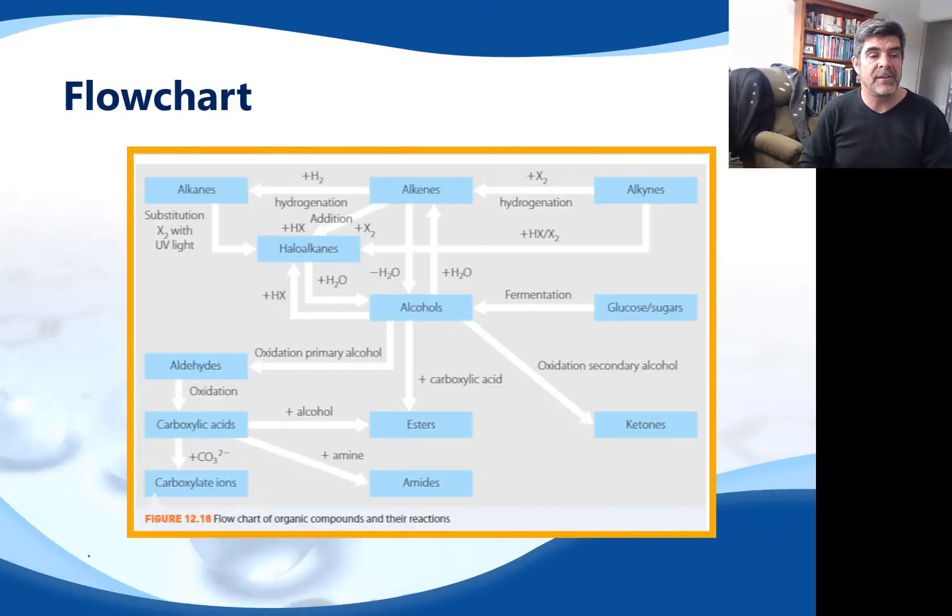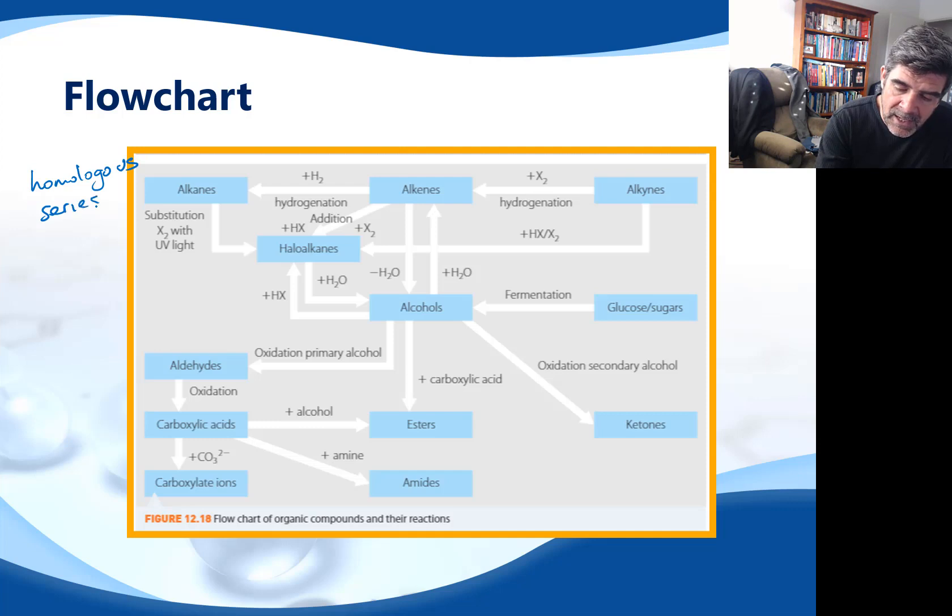So let's have a quick look. Here's a figure from one of the textbooks, and you can see that this is a very generalized kind of flowchart. We've looked at homologous series, and you can see a number of these listed here: the alkanes, the alkenes, the haloalkanes, the aldehydes, the esters, and so on. How do we get from one group to another?